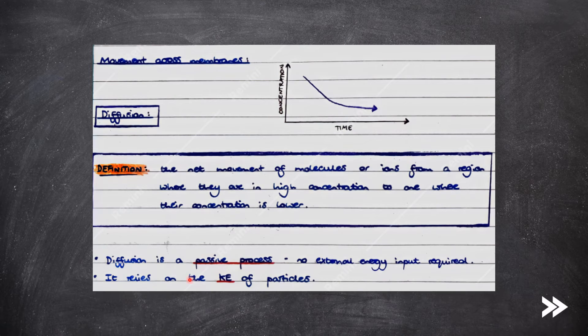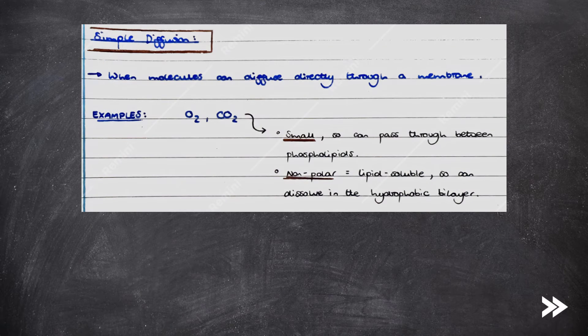First of all, we have diffusion. Diffusion is the net movement of molecules or ions from a region where they are in high concentration to one where their concentration is lower. Note that diffusion is a passive process, which means that no external energy input is required. It solely relies on the kinetic energy of particles. There are two different types of passive diffusion, simple diffusion and facilitated diffusion.